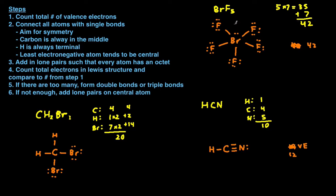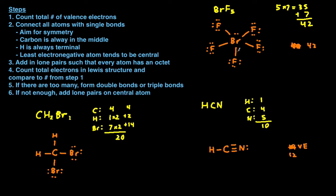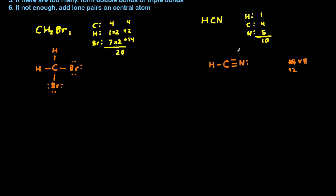That means this is the correct Lewis structure for BrF₅. We just went through three examples covering different scenarios: the first where valence electrons match up, the second where there are too many so we form double or triple bonds, and the last where there aren't enough so we add additional lone pairs to the central atom. If you have any questions, leave a comment and I'll address them. If you found this video helpful, like, subscribe, and share. In the next series I'll post a video on more exceptions to Lewis structures. Keep practicing and I'll see you next time.